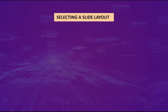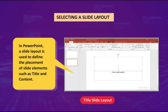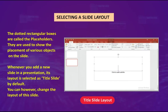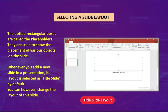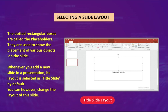Selecting a slide layout: In PowerPoint, a slide layout is used to define the placement of slide elements such as title and content. The dotted rectangular boxes are called placeholders — they show the placement of various objects on the slide. Whenever you add a new slide in a presentation, its layout is selected as title slide by default. You can, however, change the layout of the slide.